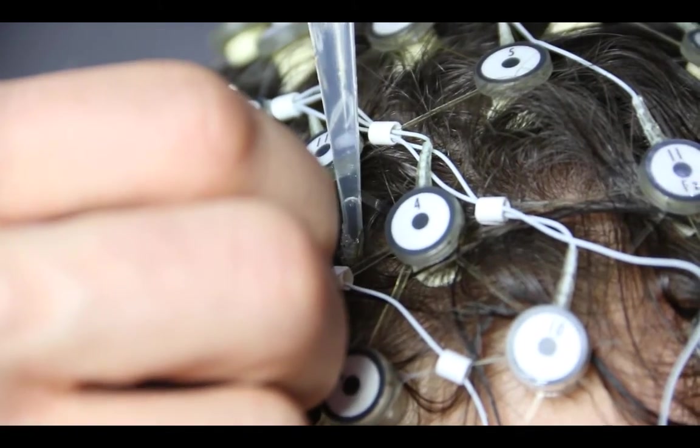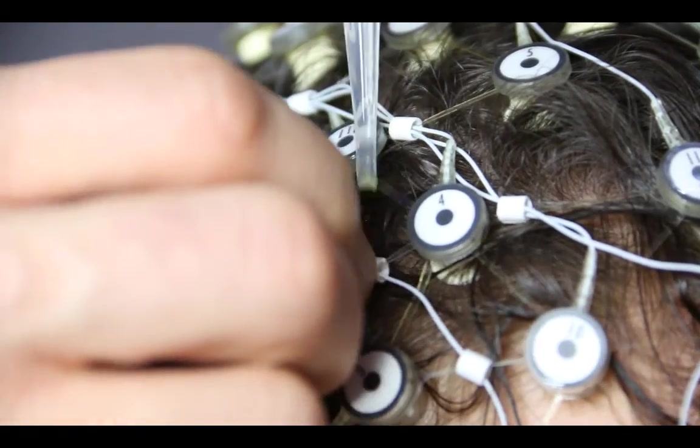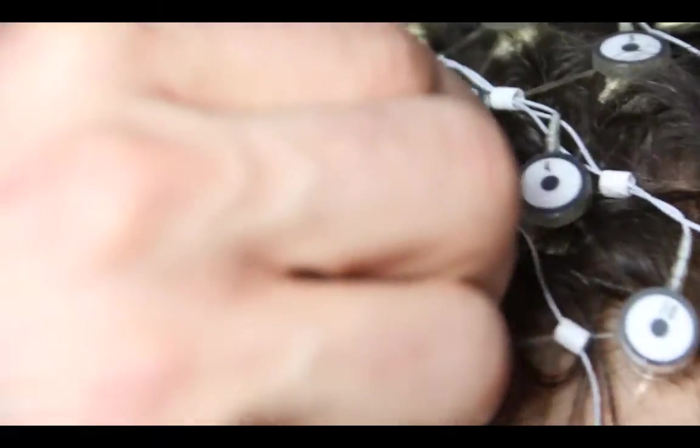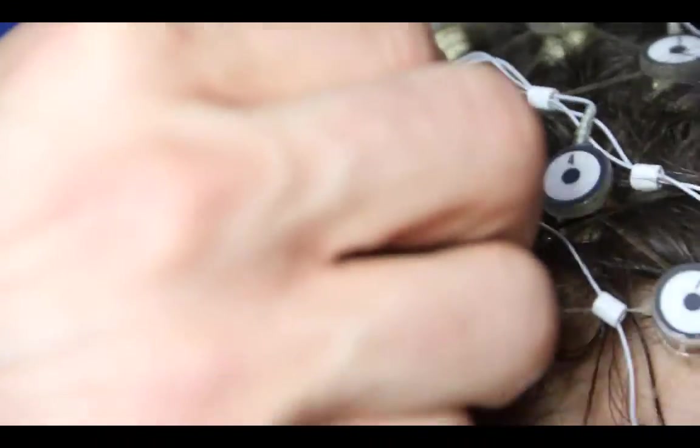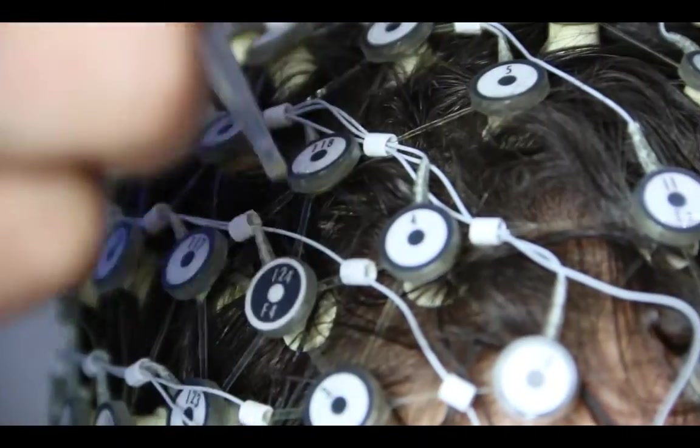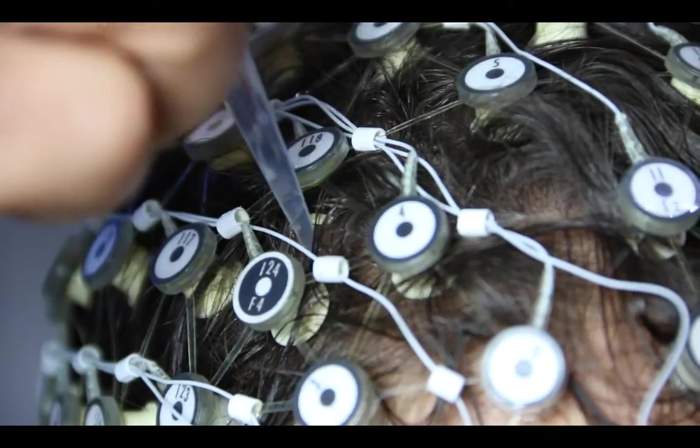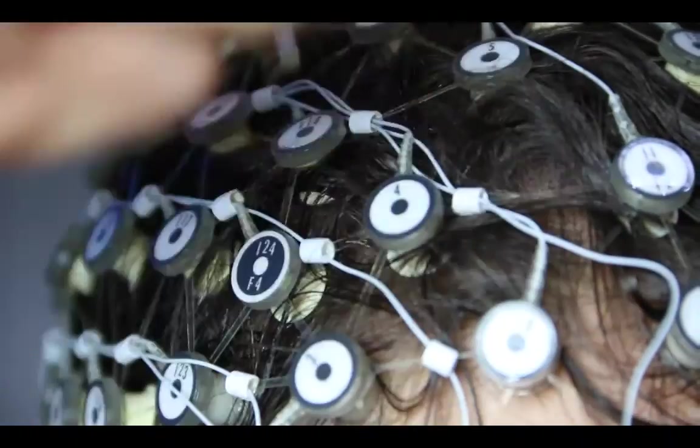First, add some more saline solution. Then wiggle around the electrodes some more. If that doesn't work, then try directly moving aside the hair to make sure that the sponge comes into direct contact with the scalp.